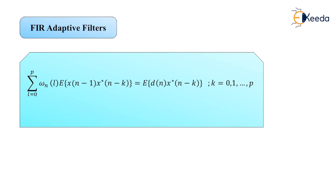Unlike the FIR Wiener filter where x(n) and d(n) are assumed jointly wide-sense stationary, the solution to these equation sets depends on n. We express the equations in vector form as: R_x(n) · w_n = r_dx(n), where R_x(n) is the Hermitian autocorrelation matrix of order (p+1)×(p+1), and r_dx(n) is the cross-correlation vector.